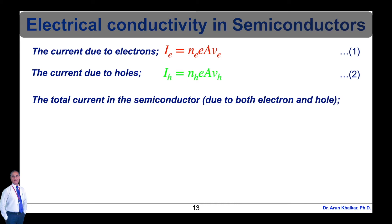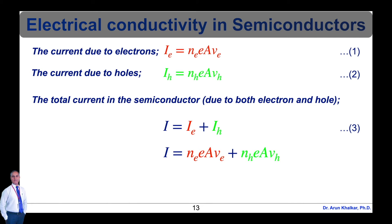The total current in the semiconductor due to both electrons and holes is I equal to I subscript e plus I subscript h (equation 3). Substituting equations 1 and 2 into equation 3, we get I equal to n_e·e·A·v_e plus n_h·e·A·v_h, which simplifies to I equal to e·A times (n_e·v_e plus n_h·v_h). This is equation number 4.